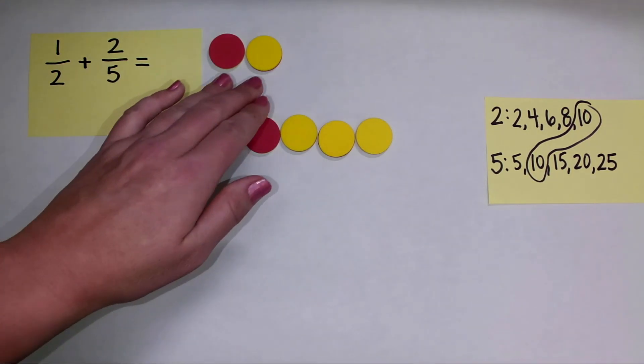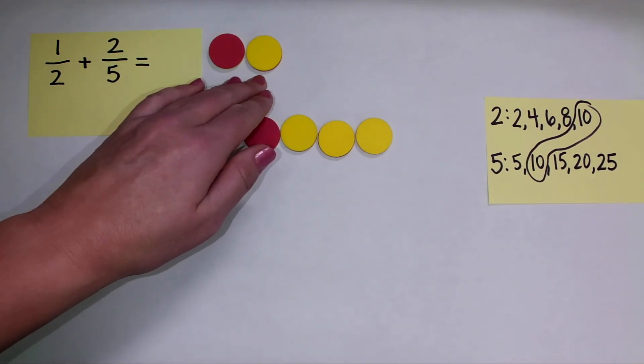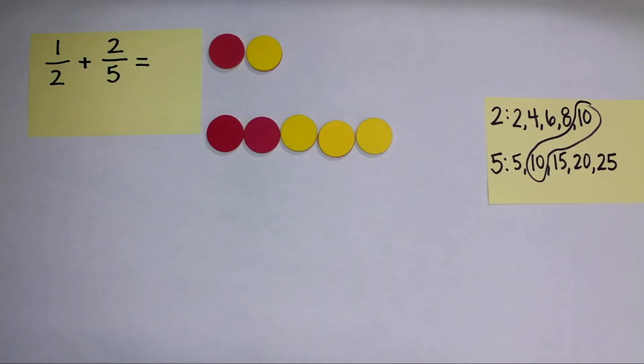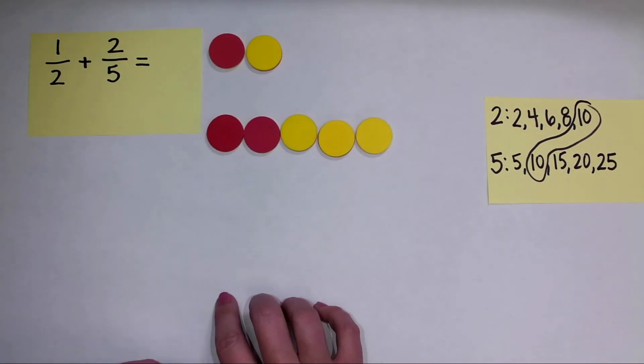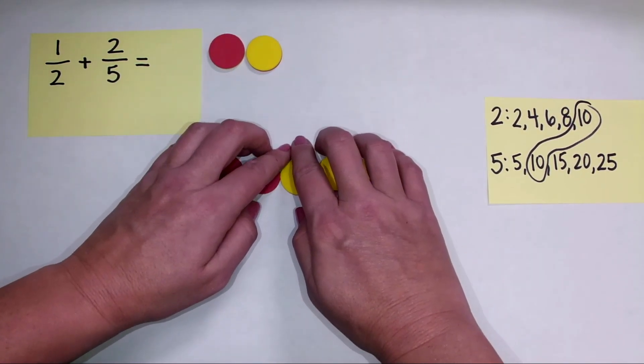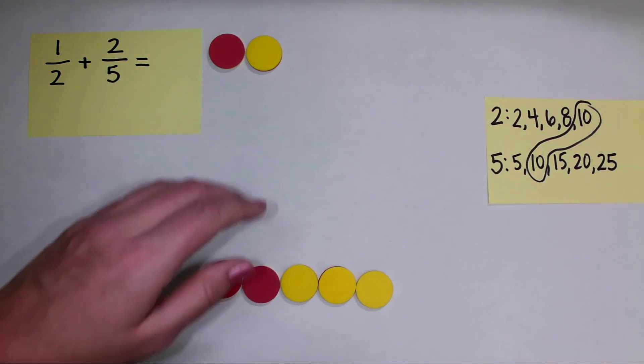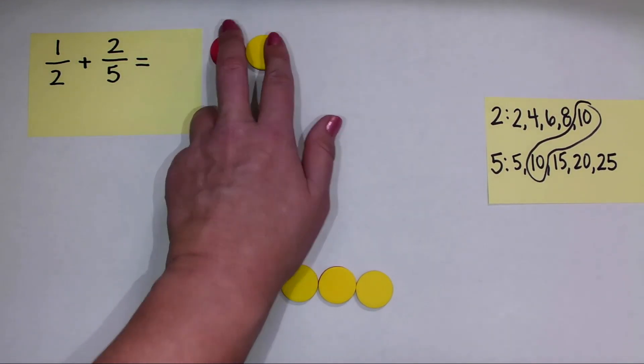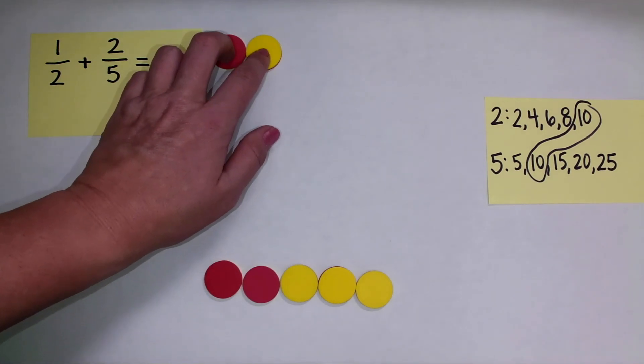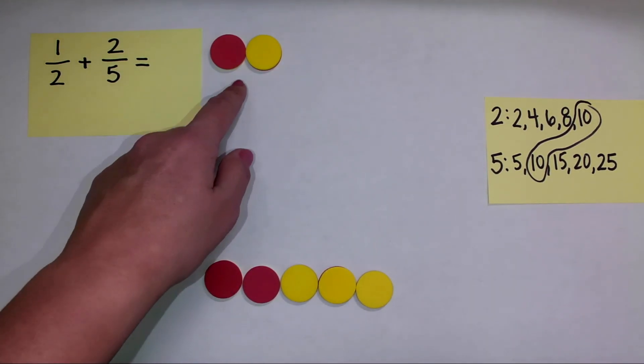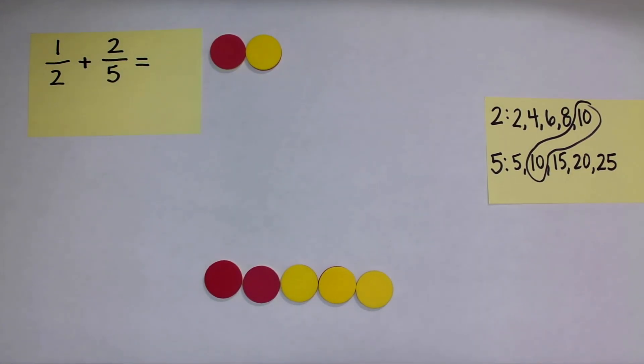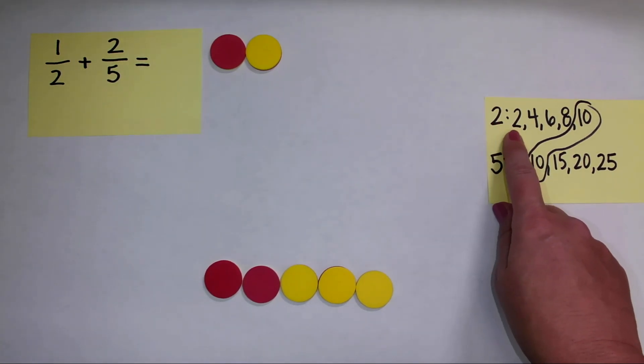So that means I'm going to take this fraction right now that has a denominator of two, and I am going to translate that into a fraction with a denominator of ten. And I'll do the same thing here for this fraction with a denominator of five. Now I'm going to slide that two fifths down because I want to have a little bit of workspace here while I figure out how I can find an equivalent fraction for a fraction with a denominator of two and now get it into tenths.